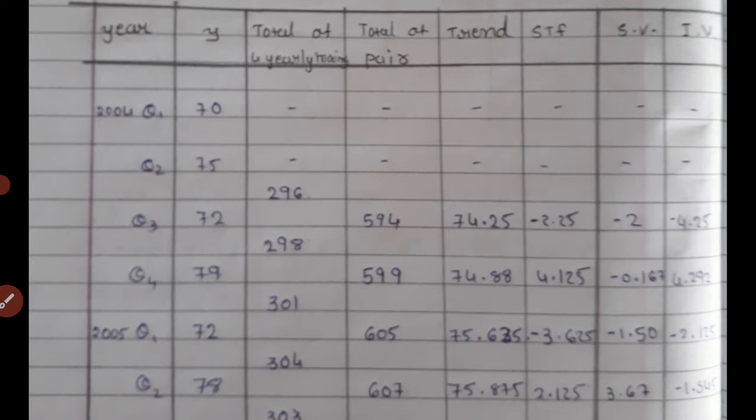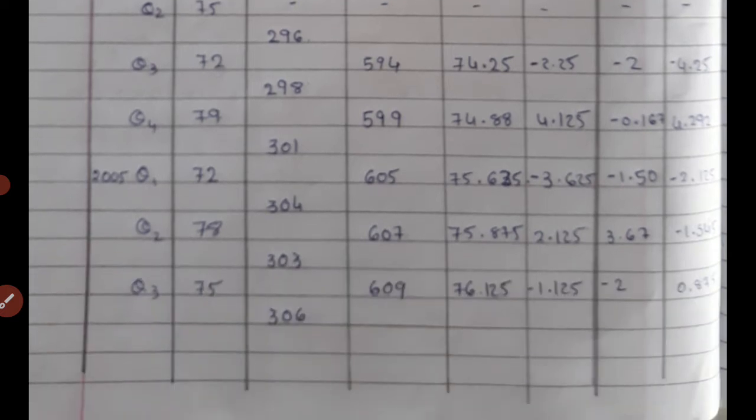Now, for the question, in 2004 we have Q1, then leave one line, then Q2, leave one line, then Q3, leave one line, then Q4. Then 2005 Q1. The data spans from 2004 Q1 through 2005, 2006, 2007 — four years of quarterly data, giving 16 values and 32 lines from 2004 Q1.